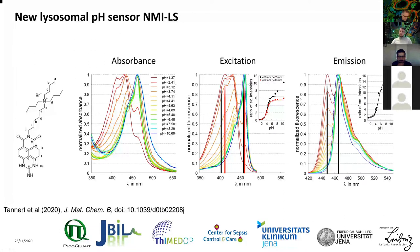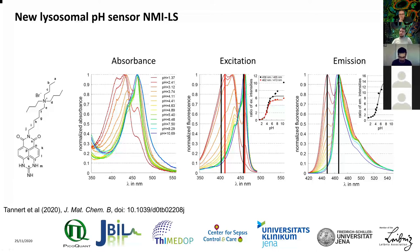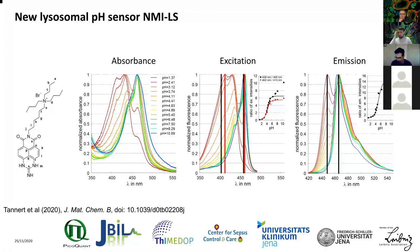You can perform ratiometric imaging by taking excitation ratios — for instance, 458 to 405 nm — which are available on confocal systems. Using these ratios gives an almost linear dependency on pH in the physiologically relevant range of pH 4 to 6. The same can be done with emission ratios, again yielding an almost linear dependency in the relevant pH region.